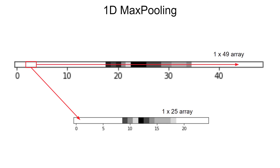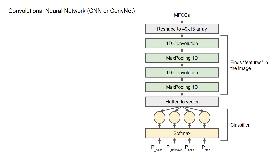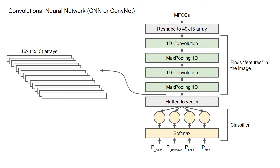Max pooling layers typically follow each convolution step to keep the filtered image size small. We repeat this convolution and max pooling step as many times as necessary. In our Edge Impulse example, it happens twice. The second convolution layer has 16 nodes instead of 8, and the second max pooling layer again halves the array size, leaving a 1 by 13 element matrix at the output of each node — giving us 16 such matrices. The final part of a CNN is almost always a classifier, usually a dense neural network. Because it expects a one-dimensional input, we first flatten our 16 arrays into one long array by stacking them end to end.